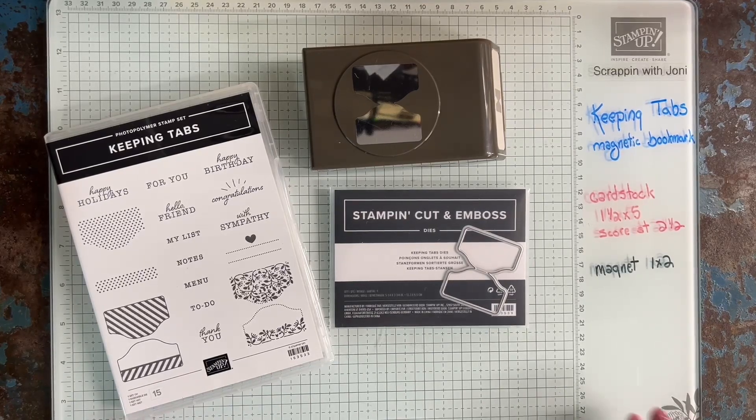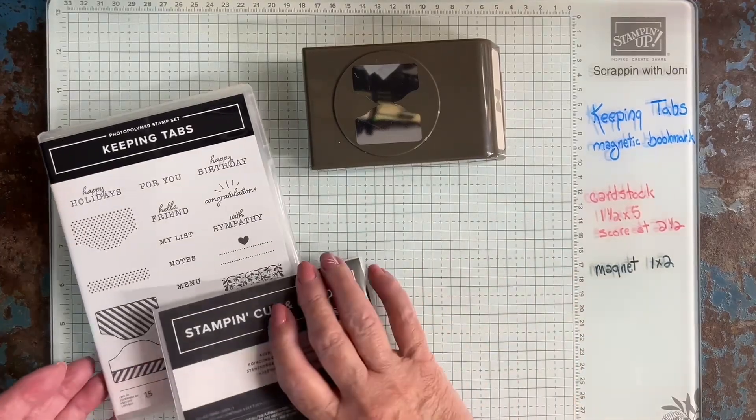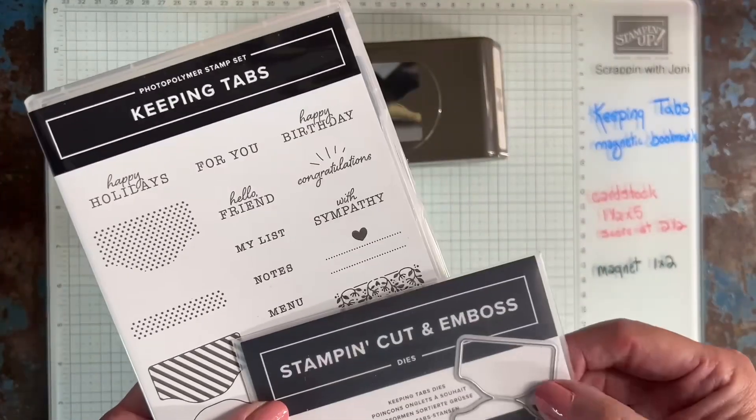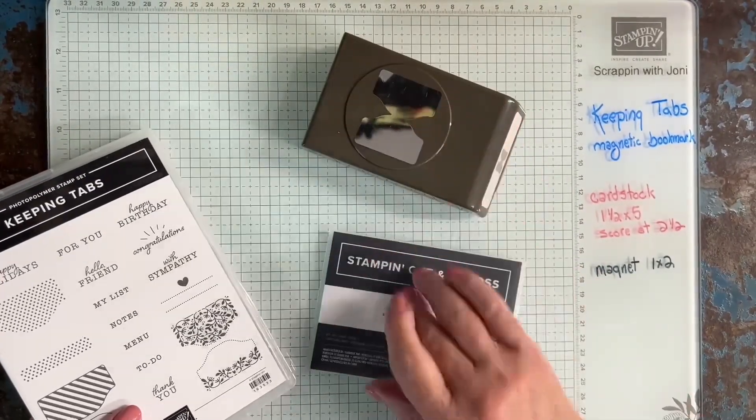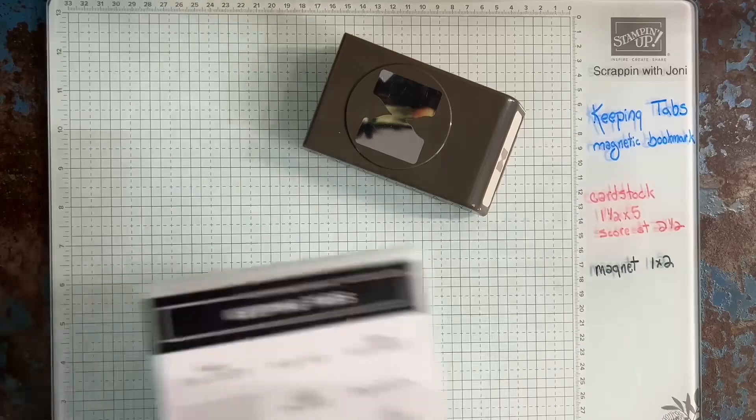So Keeping Tabs is a bundle in our new catalog and you can either purchase it as a bundle with a stamp and a die or a stamp and a punch. For my project, you just need one of these and I'm going to grab the punch.